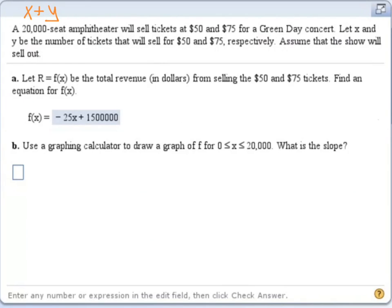we have a 20,000 seat amphitheater that will sell tickets at $50 and $75 for a Green Day concert. We're going to let X be the number of tickets we sell at $50 and Y be the number of tickets we sell at $75. This means the sum of X and Y should equal our total number of tickets, which would be the seats, 20,000.